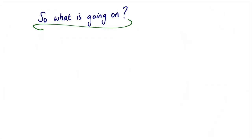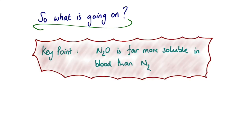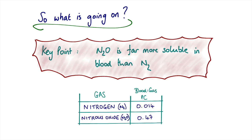So what's going on? The cornerstone to the argument about the concentration effect is that nitrous oxide is far more soluble in blood than nitrogen. To quantify solubility in blood, we can use the blood gas partition coefficient. If we compare the values of the blood gas partition coefficient from nitrogen to nitrous oxide, we see that there's roughly a 30-fold increase in solubility of nitrous oxide compared to nitrogen, and this has an important effect.